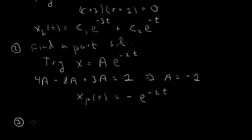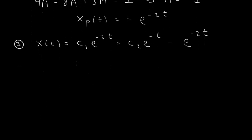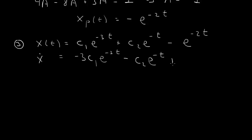Now we have the homogeneous solution and the particular solution. The third step says we write the general solution as the sum: c1 e to the minus 3t plus c2 e to the minus t plus the particular solution, minus e to the minus 2t. We also need x-dot: x-dot equals minus 3c1 e to the minus 3t minus c2 e to the minus t plus 2 e to the minus 2t.